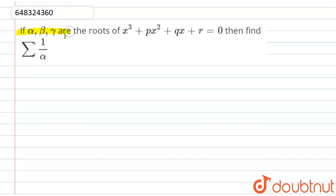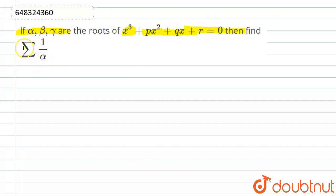Hello students. The question is: if alpha, beta, gamma are the roots of the equation x³ + px² + qx + r = 0, then we have to find the value of summation of 1 upon alpha.